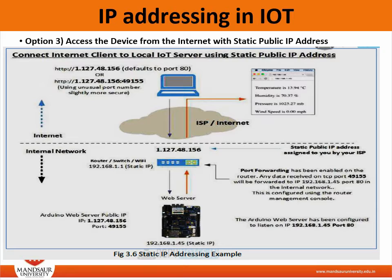In the first URL, we do not specify the port number, so the browser will use the default port 80. In the second URL we use port 49155. By using a random private port number we improve security for our IoT server, since port scans typically check port 80 as the default and may not scan private port numbers. If you have multiple IoT devices, you can set up port forwarding on the router to recognize different port numbers.